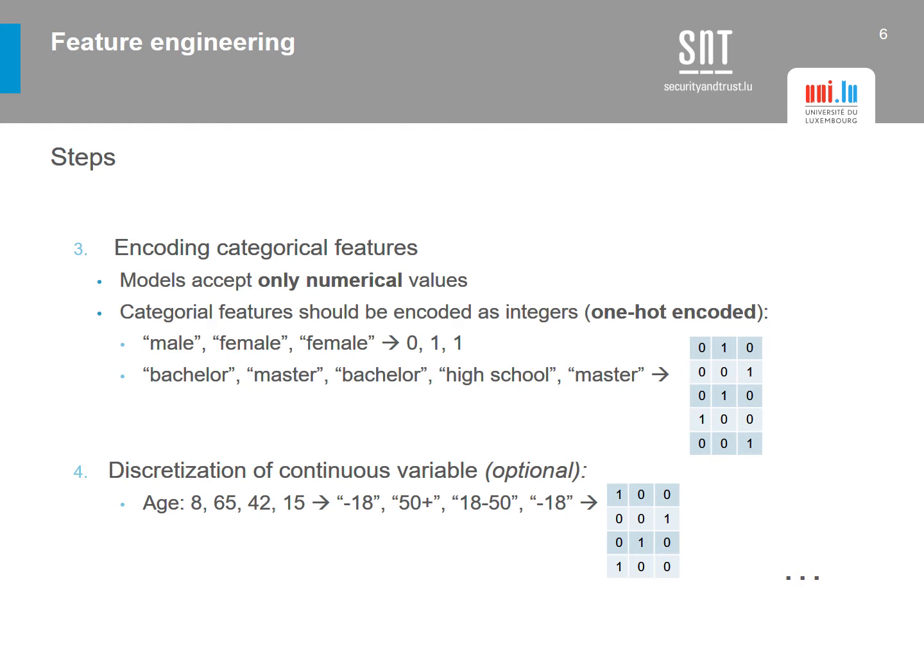If we have more than two categories, we split into several features. For example, with diploma, we may have high school, bachelor's, and master's. We transform these three values into three binary features. If a user has only a bachelor's diploma, the value will be 0-1-0, where the first column represents high school, the second represents bachelor's, and the third represents master's. Only a master's diploma would be represented as 0-0-1. Many combinations are possible.